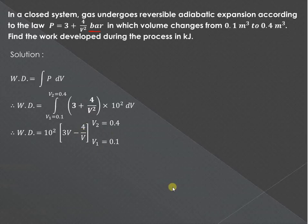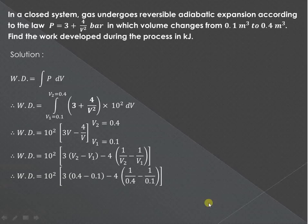The limits are from 0.1 to 0.4. In place of V, substitute the upper limit that is V2 minus the lower limit that is V1. Similarly, 1 upon V - here also substitute the upper limit, that is 1 upon V2 minus 1 upon V1. Substitute the values, so V1 is 0.1 and V2 is 0.4. By substituting these values and solving, we will get the work done as 30.9 into 10 raised to 2 kilojoule.